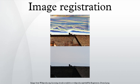Registration methods may be classified based on the level of automation they provide. Manual, interactive, semi-automatic, and automatic methods have been developed. Manual methods provide tools to align the images manually. Interactive methods reduce user bias by performing certain key operations automatically while still relying on the user to guide the registration. Semi-automatic methods perform more of the registration steps automatically but depend on the user to verify the correctness of a registration. Automatic methods do not allow any user interaction and perform all registration steps automatically.